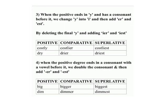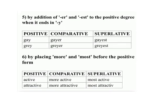Rule 4 examples — positive, comparative, superlative: big, bigger, biggest; dim, dimmer, dimmest. Rule 5: By addition of -er and -est to the positive degree when it ends in -ey. Examples: gay, gayer, gayest; gray, grayer, grayest.